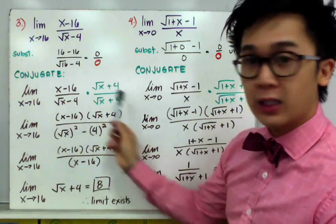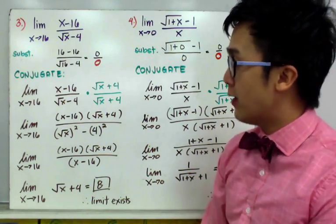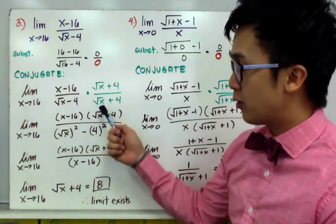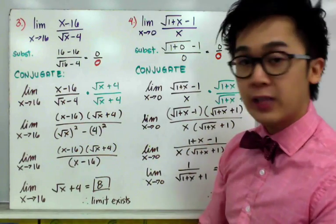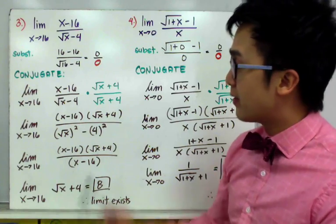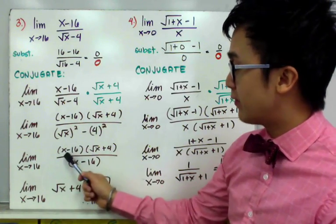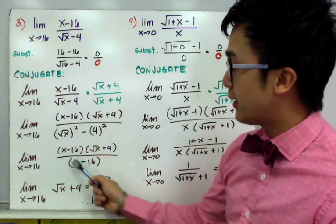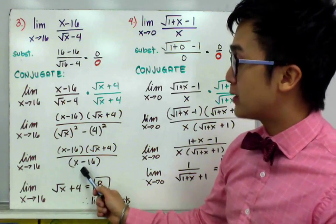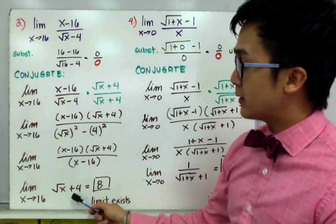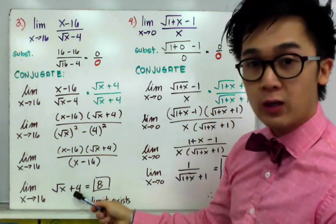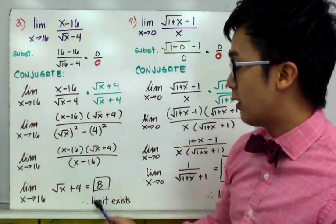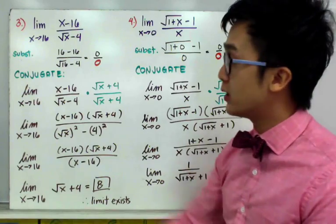Notice that I did not foil the numerator — that's a key strategy: leave expressions grouped so you can spot cancellations. Since the numerator still has x minus 16 and the denominator simplified to x minus 16, we cancel them, leaving square root of x plus 4. By direct substitution with x equals 16, the limit equals 8. The limit exists for this rational function using the conjugate method.